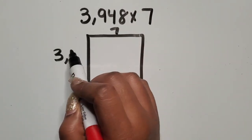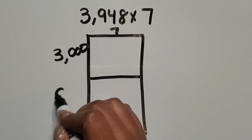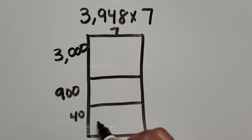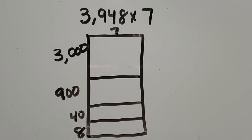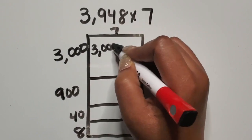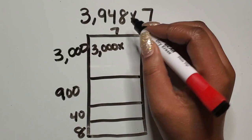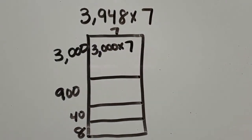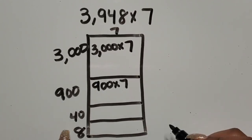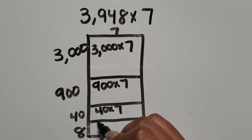I'm going to break up that four-digit number again based on place value. So we have three thousand, nine hundred, forty, and eight. I'm going to write my expression: three thousand rows of seven, nine hundred rows of seven, forty rows of seven, and eight rows of seven.